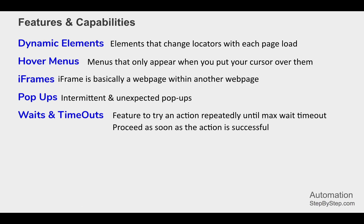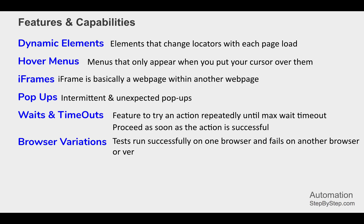For waits and timeouts, we have already seen that you can set a timeout in your steps and test case. This is the maximum timeout, but as soon as the element is found and the action is done, it will proceed to the next step — it is a smart wait. Another difficult situation in automation testing is browser variations. Tests often work fine on one browser but fail on a different browser or browser version due to changes in element properties or locators. This is also handled by the AI capabilities of the new recorder.